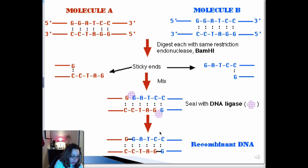So again, just another example. You have two molecules, molecule A and molecule B. Let's just say molecule A is your plasmid DNA, and molecule B is your DNA of interest, DNA from, let's say, a mouse.